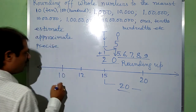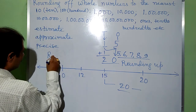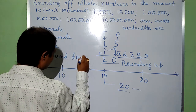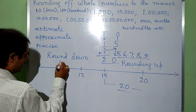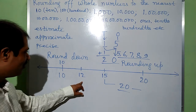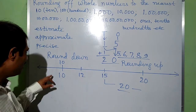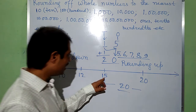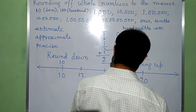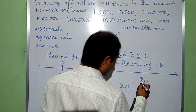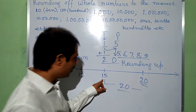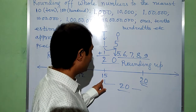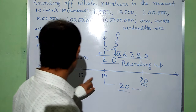Previously, 12 was rounded down to 10, which is less than the given number 12. This is rounding down because the result is less than 12. And rounding up gives a result greater than the given number. So here two cases are possible: either rounding up or rounding down.